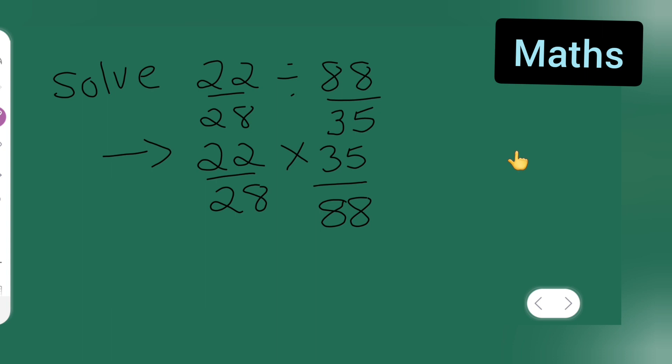Let's cancel: 22 contains 11 and 2; 88 has 8s. Next, in the table of 7: 7×5 is 35, and 7×4 is 28. Now what remains?